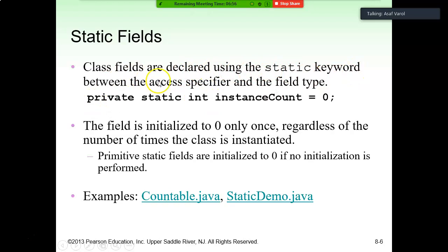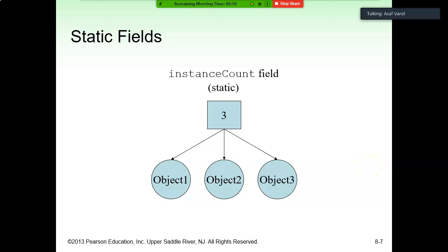Class fields are declared using the static keyword placed between the access specifier — here, private — and the field type — here, integer. You can see where to place the static keyword in the statement. The field is initialized to zero only once, regardless of how many times the class is instantiated. Primitive static fields are initialized to zero if no initialization is performed. In this figure you see three objects all connected to the instance count field, which is static — meaning all three objects share that single instance count field.